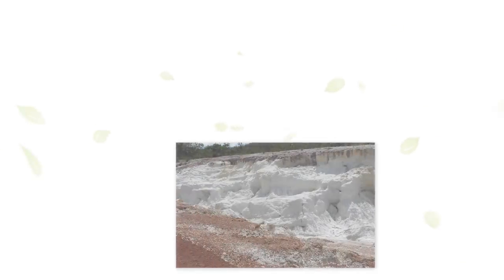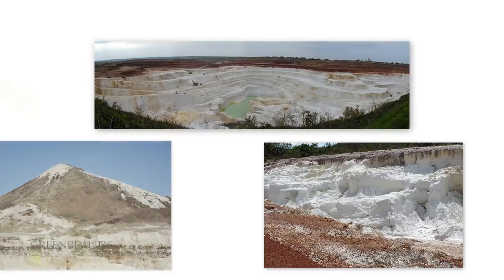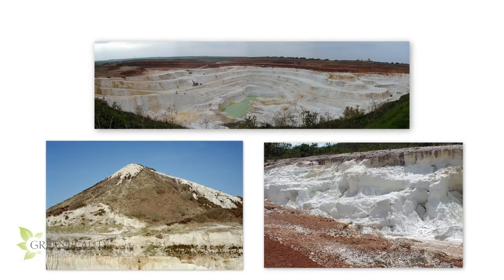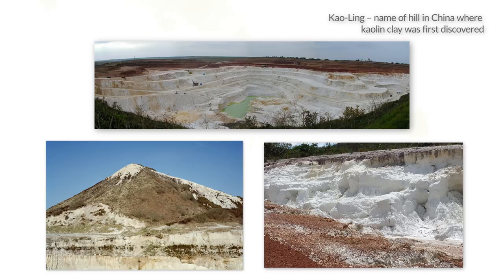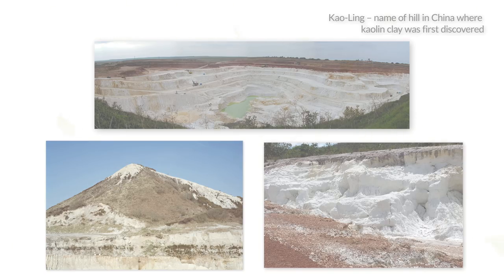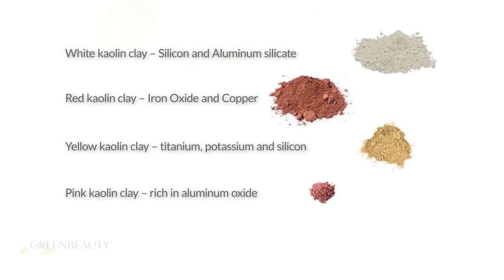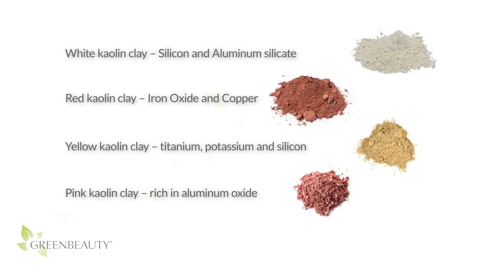Kaolin clay, sometimes called china clay, white clay, or kaolinite clay, is different. It's mostly found in soil that developed from the chemical weathering of rocks in hot, moist climates. The word kaolin is derived from kaoling, meaning 'high ridge,' which is the name of the hill where the earliest samples were found. Most kaolin clays you find will most likely be white in color, but if it contains certain minerals it will have a different color.